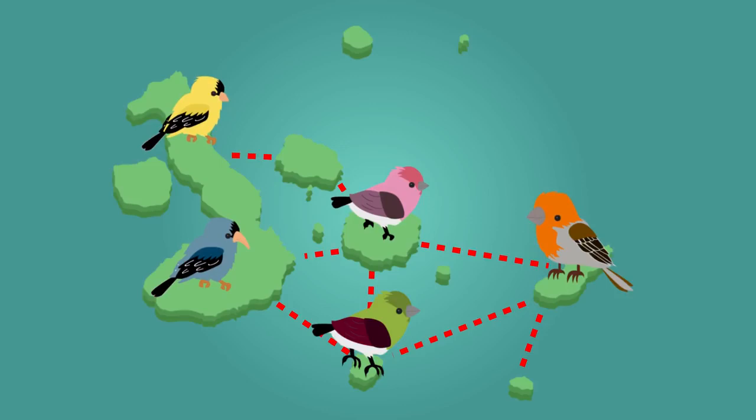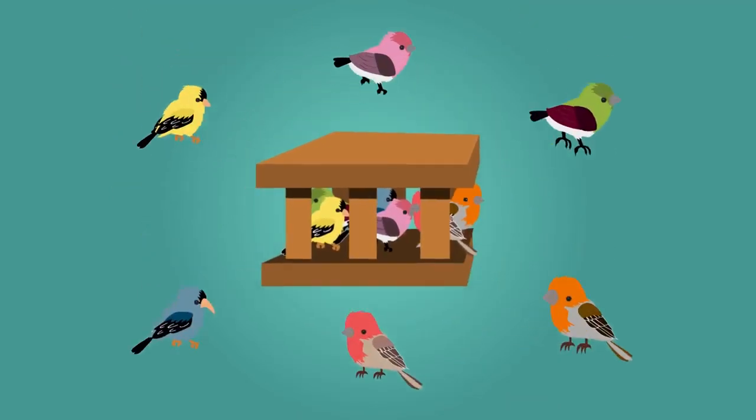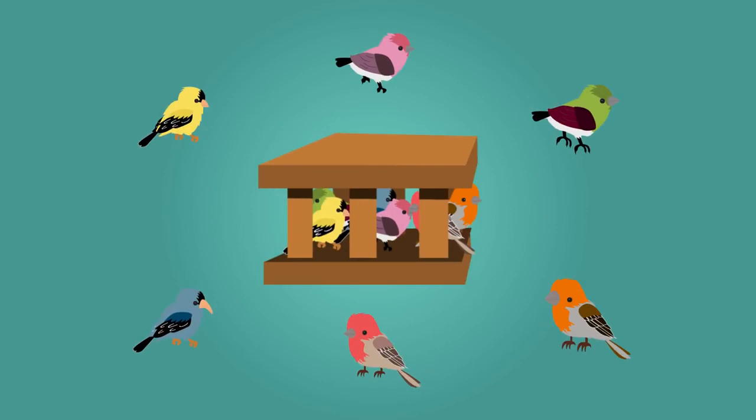In all, 13 of the birds brought back by Darwin were identified as being entirely new species, all similar to each other, but with definite variations from their common ancestor.